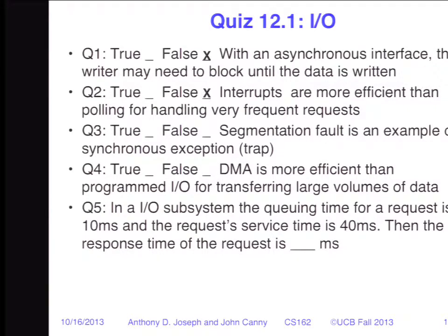Question three: segmentation fault is an example of a synchronous exception or trap. That's true. When you have a segment fault, you are immediately going to trap into the kernel — you cannot block it, stop it, or prevent it from happening.